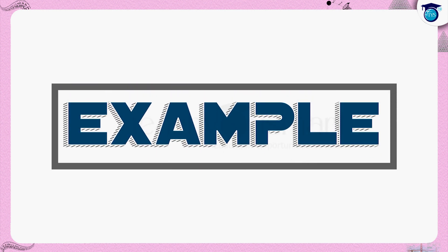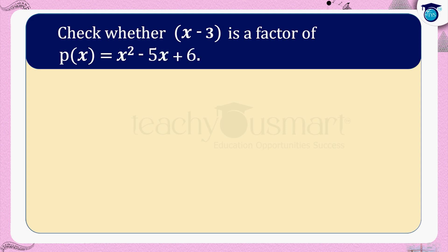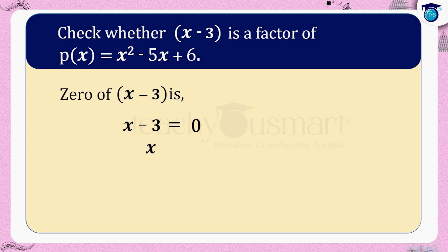Let us do one example. Check whether (x − 3) is a factor of p(x) = x² − 5x + 6. First, let us find the remainder when p(x) is divided by (x − 3). For that, find the zero of (x − 3): put x − 3 = 0, which implies x = 3.